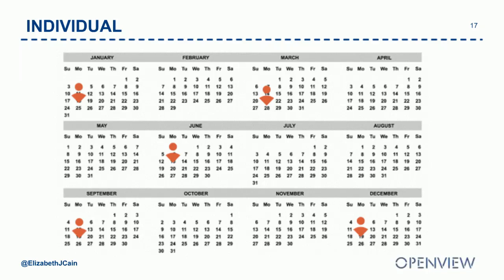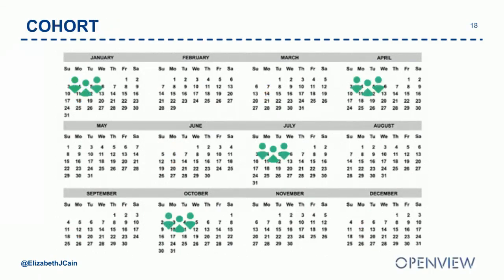When you've delivered the same training nine times you start skipping topics. The cohort model gives people more dedicated attention and better training. I tried having everyone start at the beginning of each quarter — four trainings a year — and while there were always one or two people who couldn't make it work, it created way more scale. Whether you're doing individual or cohort onboarding, think about ways to optimize for the manager's time.